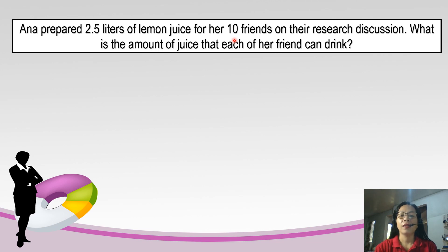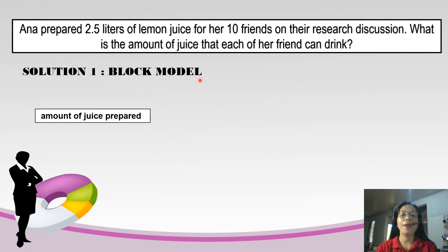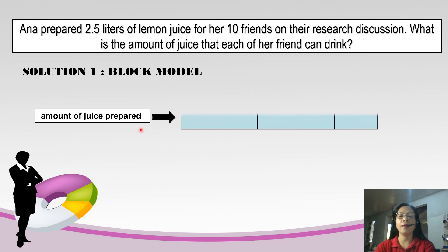Let's find out what is the amount of juice that Anna's 10 friends can drink. Let's have Solution Number 1 — the block model. First, let's draw a block that represents the 2.5 liters of lemon juice. The amount of juice prepared by Anna is 2.5, so we have 2 big blocks and 1 smaller block. The smaller block represents one half or 0.5, and the 2 big blocks represent 2 liters.